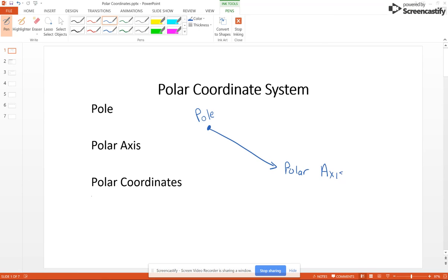If you have a point, say we have this point over here, what you're going to do is use the polar axis as your initial side. You draw your terminal side through that point and there is your angle theta.